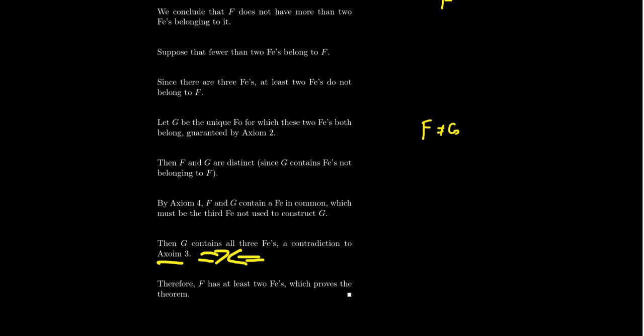So our assumption was wrong. We assumed F has fewer than two fees. We've proven F can't have three fees, but it also can't have fewer than two. So it must have exactly two fees, which proves our very first theorem. This is the hardest of the theorems — the others will follow quickly from it. It might seem strange, but just follow the logic. From the axioms, we've proven that every foe contains exactly two fees.